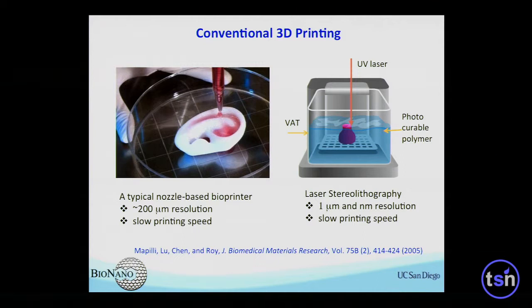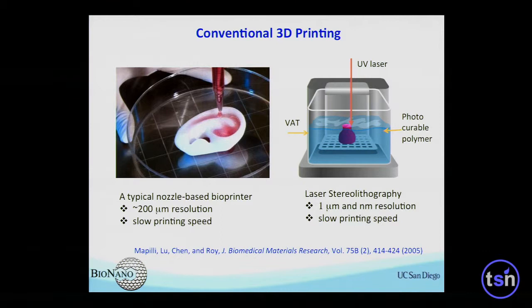A traditional 3D printer usually uses a nozzle to deliver the biological inks, dot by dot and then layer by layer. Typically for each of these nozzles, the resolution is about 200 microns. This is really a physical confinement of drop delivery with this kind of approach.